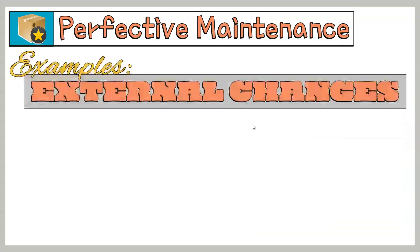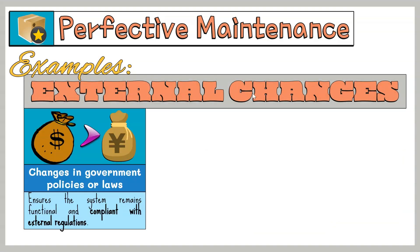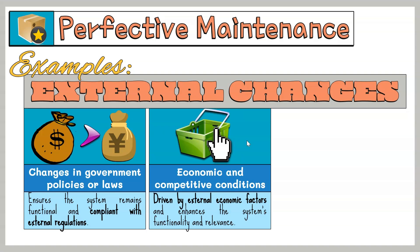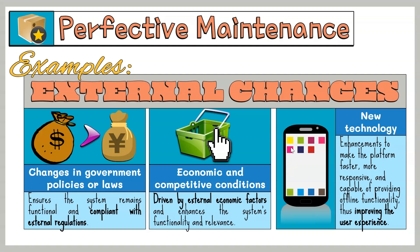On the other hand, here are some examples of external changes. First, changes in government policies or laws — for instance, a policy to adopt a single Asian currency would require significant software updates for banks in member countries, ensuring the system remains functional and compliant with external regulations. Second, economic and competitive conditions, such as a company needing to implement e-commerce capabilities to stay competitive. Third, new technology — for example, a company updates its e-commerce platform to incorporate progressive web apps, making the platform faster, more responsive, and capable of providing offline functionality, thus improving the user experience.